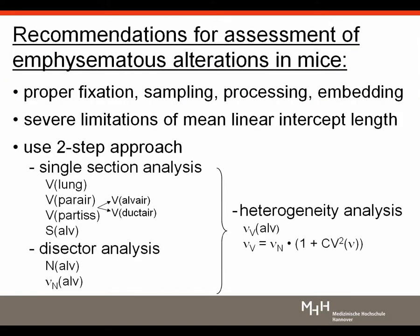The basic recommendations for emphysema assessment in mice are: fix, sample, process, and embed properly. Mean linear intercept length has severe limitations and is definitely not recommended as the single parameter for emphysema assessment. We recommend a two-step approach: at the basic level on single sections, estimate total lung volume, total volumes of parenchymal air (alveolar and alveolar duct) and parenchymal tissue, and particularly alveolar surface area. At an advanced level, perform dissector analysis for estimation of alveolar number and mean alveolar size, which also allows assessment of heterogeneity of alveolar sizes.